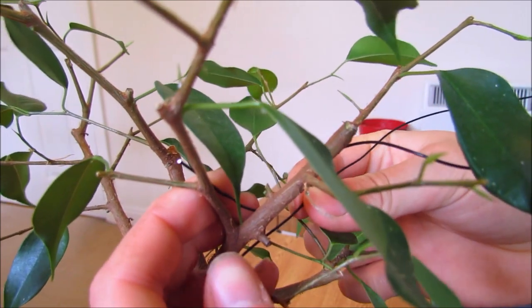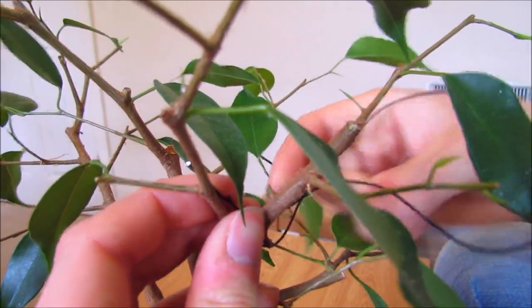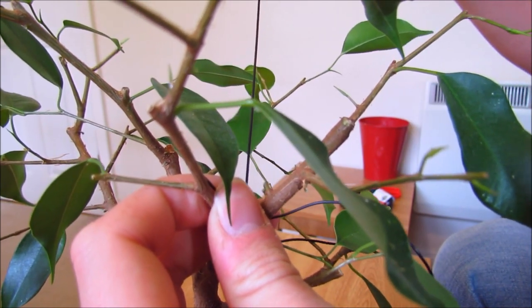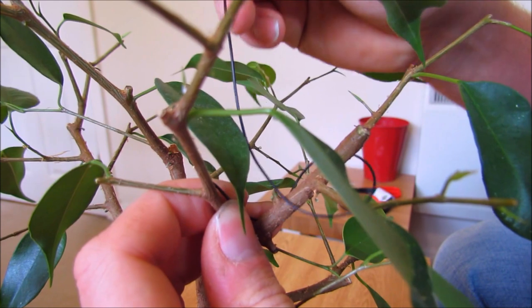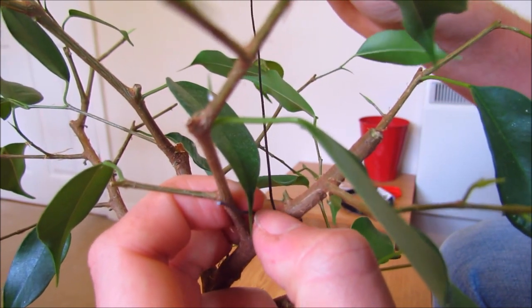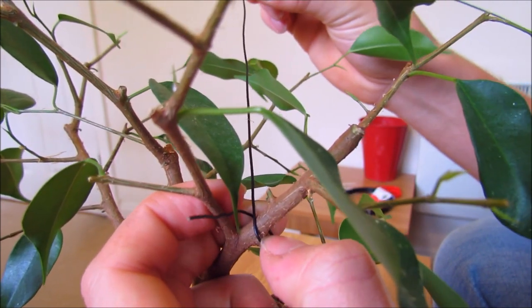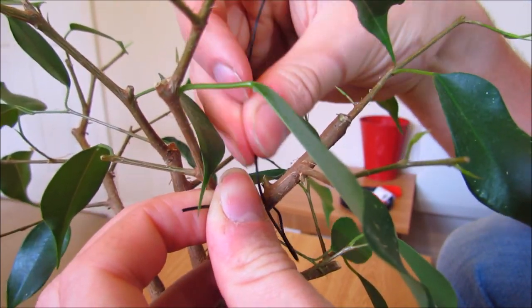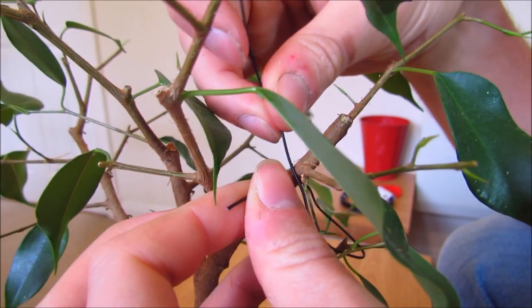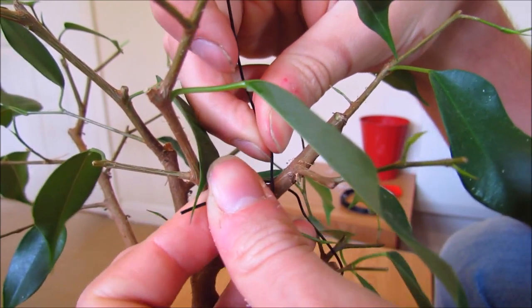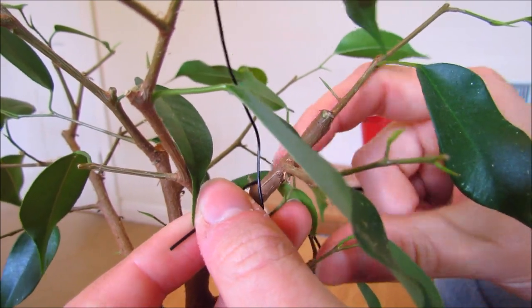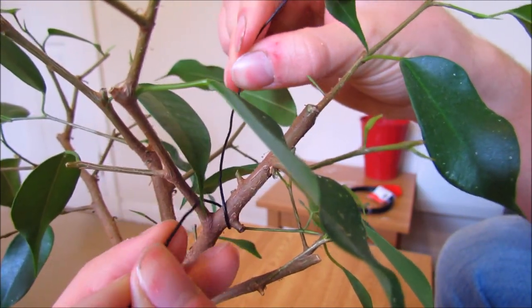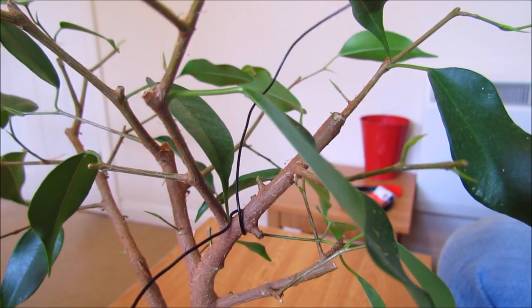So I'll just thread it through like so. Be careful not to catch any other branches as I thread it. There it is, it's wrapped around the main trunk. I'll just put it a bit lower around the other little one there. So wrapping it around the main trunk will give it a good anchor point.